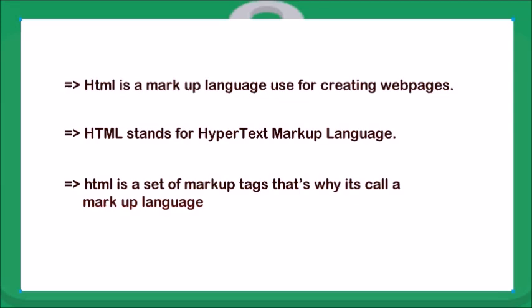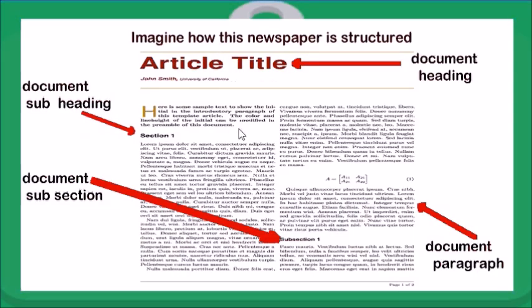Let's take this article as an example. We have a document heading, subheadings, and paragraphs. HTML tags structure this article to make it easier to read, with distinction between the different sections: the heading, the paragraphs, and the subsections.